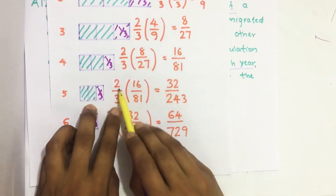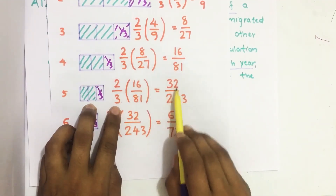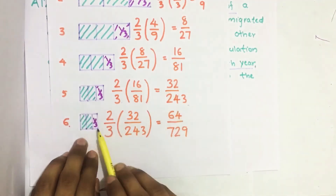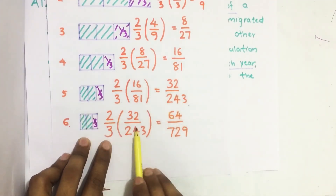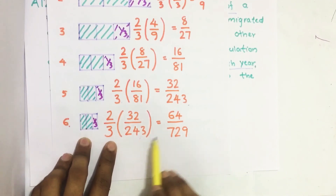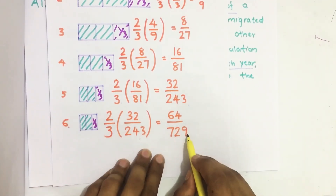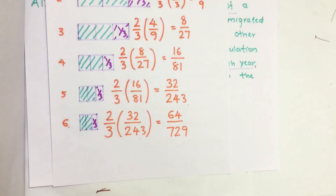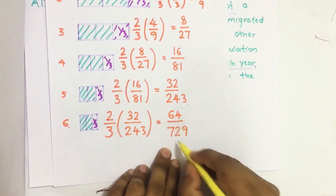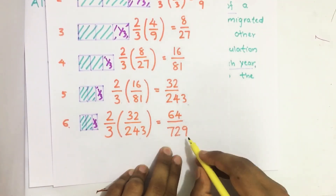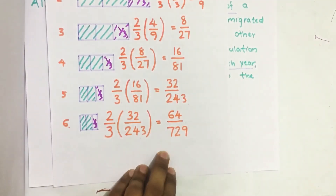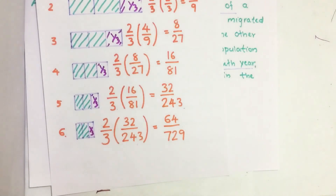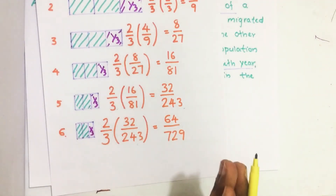Similarly, two thirds of the leftover population thirty-two by two forty-three gives us sixty-four by seven twenty-nine. So after the sixth year, the population remaining in that community is sixty-four divided by seven twenty-nine of the initial population.